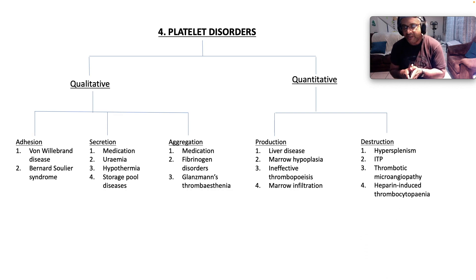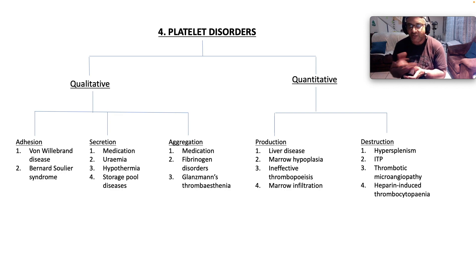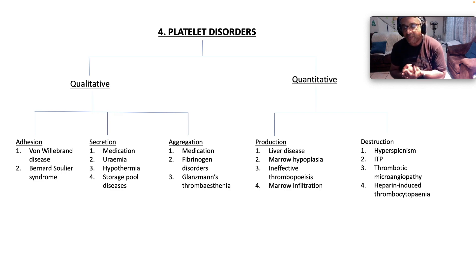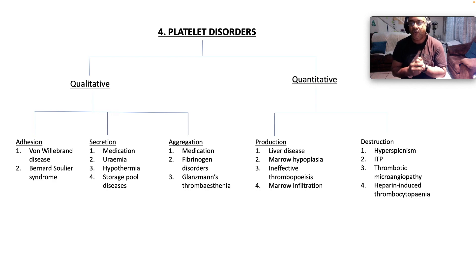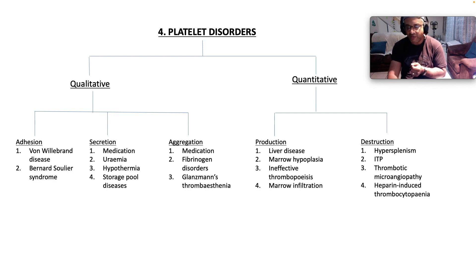Destruction of platelets is due to hypersplenism, often on the back of portal hypertension coming from cirrhosis. It could be immune thrombocytopenic purpura, it could be a thrombotic microangiopathy — which is a MAHA, a microangiopathic hemolytic process — or heparin-induced thrombocytopenia and thrombosis, called HIT.